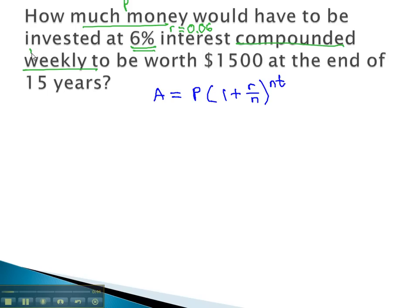It is compounded weekly, meaning the number of compounds in a year is 52. At the end, we want the final amount to be $1,500.